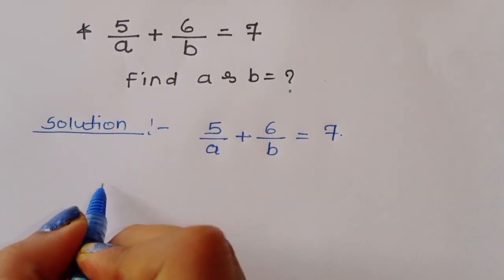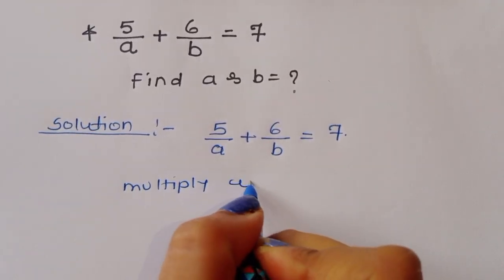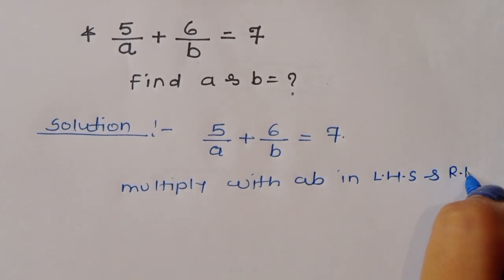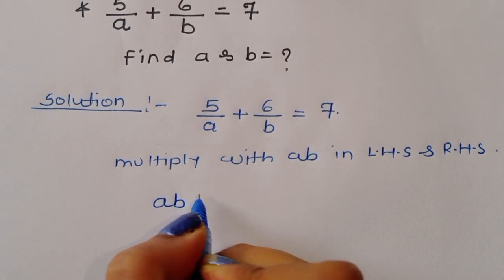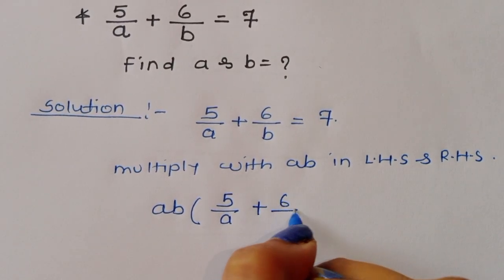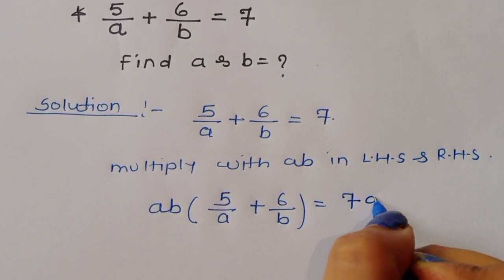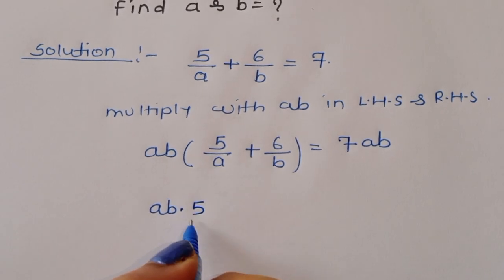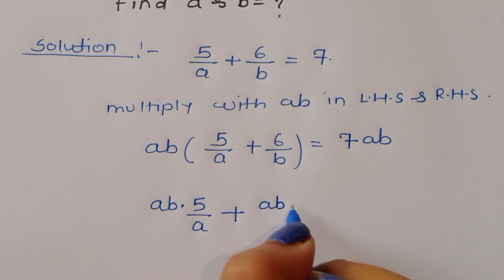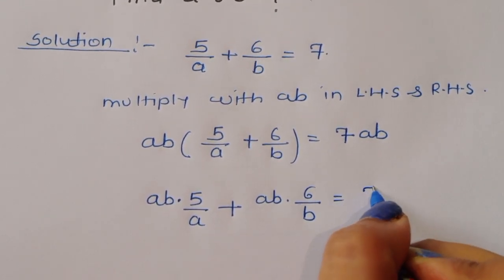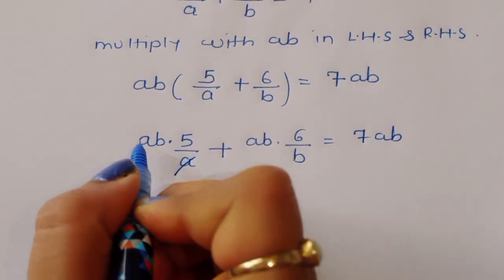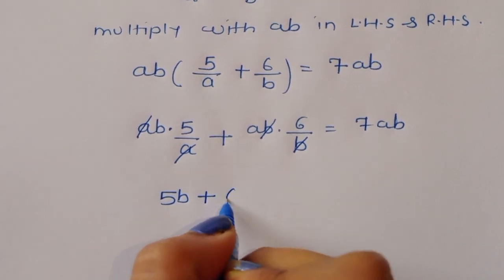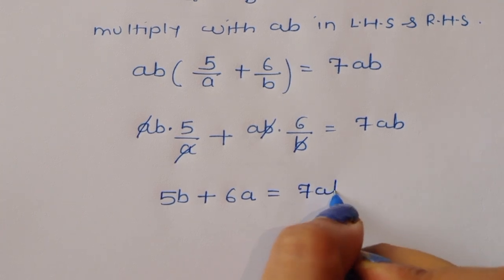We can multiply both LHS and RHS with AB. So multiplying with AB gives AB times (5 upon A plus 6 upon B) is equal to 7 times AB. Then AB multiplied by 5 upon A plus AB multiplied by 6 upon B equals 7AB. The A and B cancel respectively, giving us 5B plus 6A is equal to 7AB.